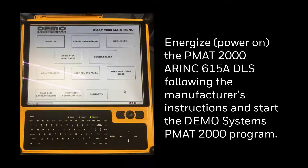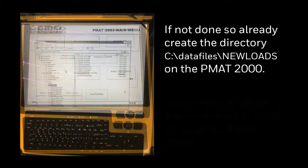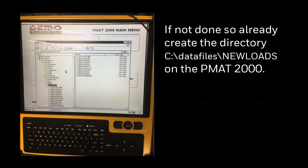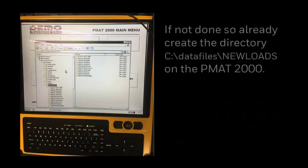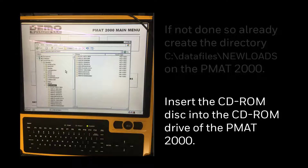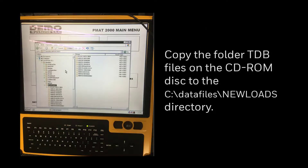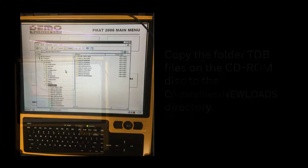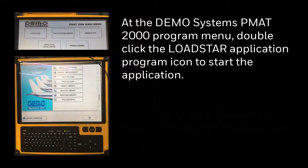Energize and boot up the PMAT-2000 ARINC 615A DLS following manufacturer's instructions and start the demo system's PMAT-2000 program. If not done so already, create the directory New Loads on PMAT-2000 under C:\Data Files. Insert the CD-ROM disk into the CD-ROM drive of PMAT-2000. Copy the folder TDB files on the CD-ROM disk to the New Loads directory. At the demo system's PMAT-2000 program menu, double-click the LoadStar Application Program icon to start the application.